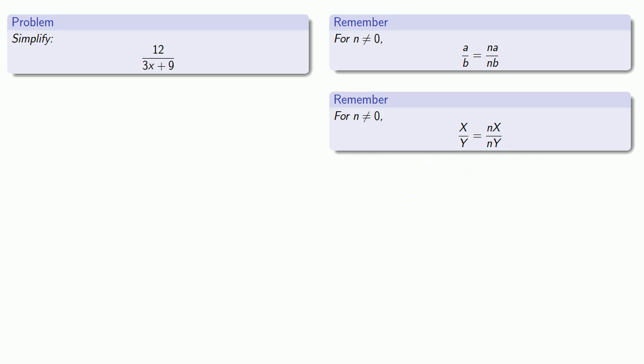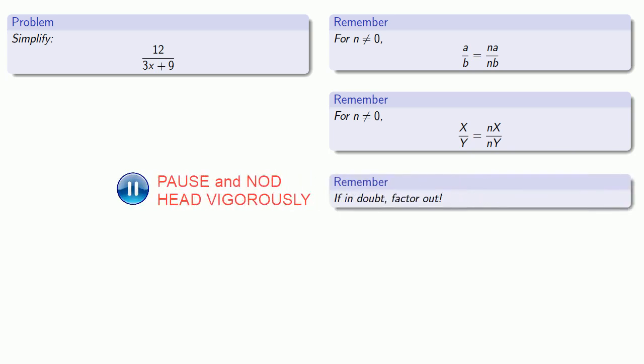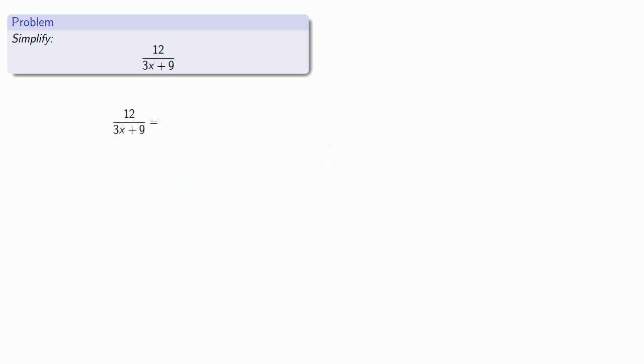And while I'm not a great fan of bumper sticker mathematics, mathematics that you could reduce to a short, quick, memorable phrase, here's a useful one. If in doubt, factor out. And what that means is that a useful thing to do if you're not sure what to do next is try factoring. Maybe something will appear.